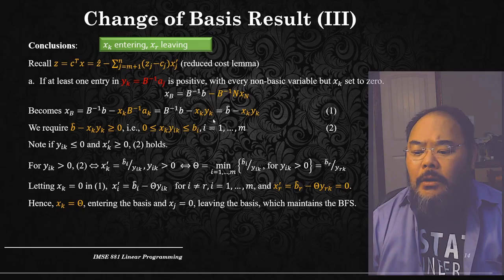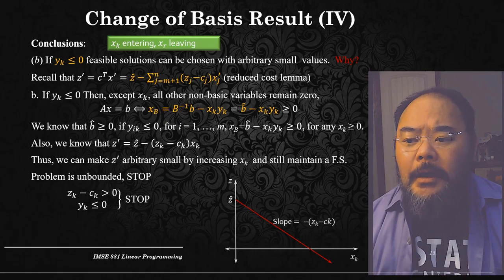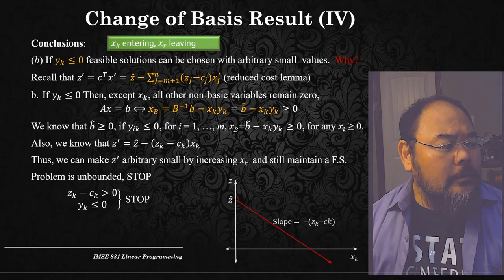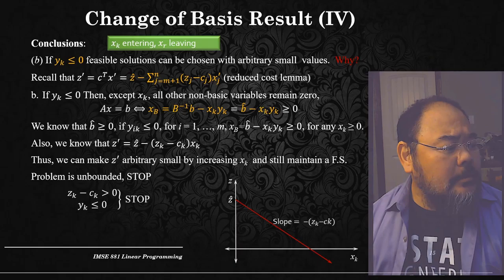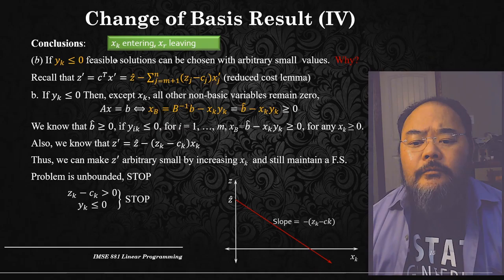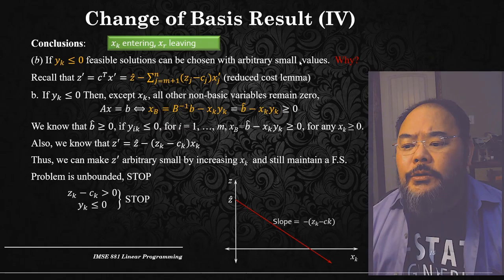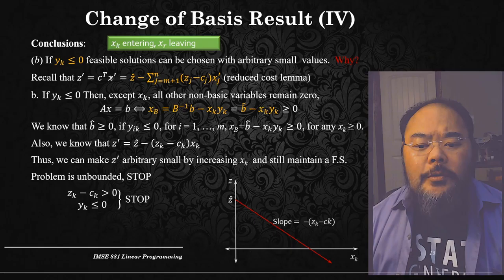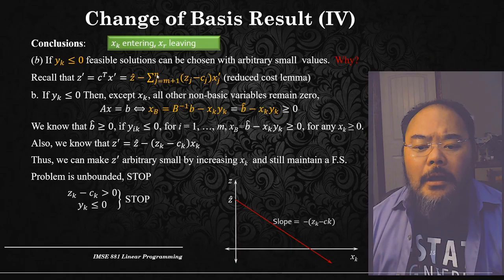Now the change of basis result: when x_k is the entering variable and x_r is the leaving variable, if all elements in column y_k are less than or equal to zero, a feasible solution can be chosen with an arbitrarily large value of x_k. Recall that z-prime, the new objective function value, equals z-hat minus the summation of (z_j minus c_j) times x_j for all non-basic variables, from the reduced cost lemma.